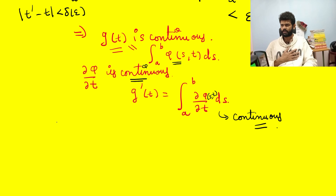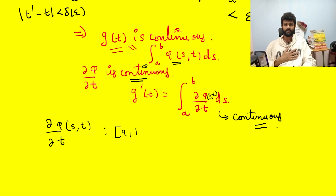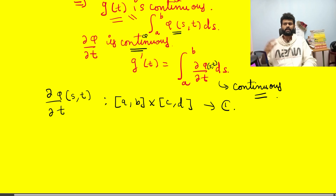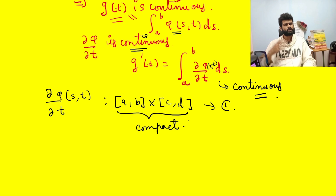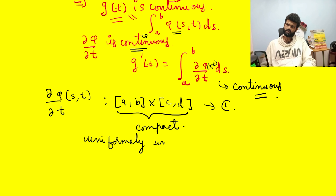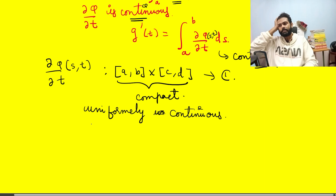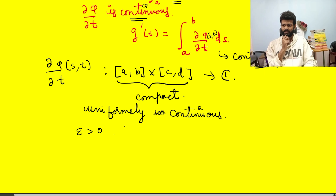Let's consider the partial derivative ∂φ/∂t of (s,t). This is continuous on the rectangle [a,b] × [c,d] and it is complex-valued. By the same argument as before, this set is compact, and continuous functions on compact sets are uniformly continuous, so ∂φ/∂t is uniformly continuous.